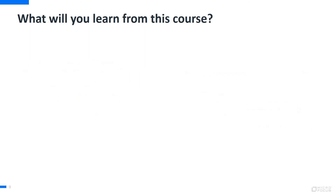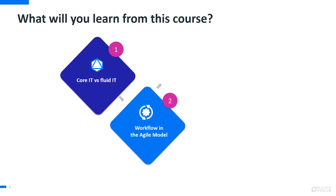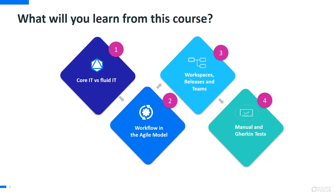The ALM Octane digital learning course is a self-paced offering that allows you to select the topics and information you need to deliver just-in-time training. Course objectives include understanding how ALM Octane provides a fluid IT solution, planning and creating workflow in the agile model, setting up workspaces and creating releases and teams, and creating and executing manual and Gherkin tests.